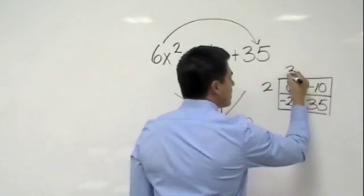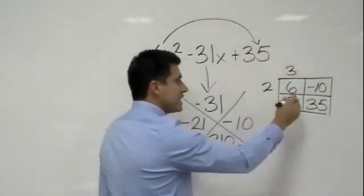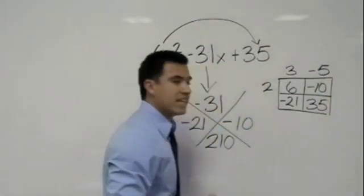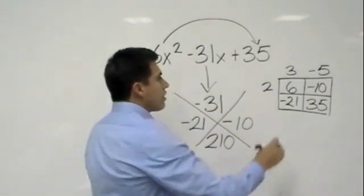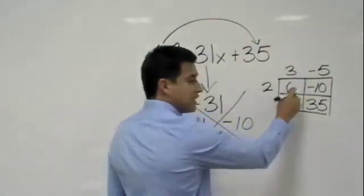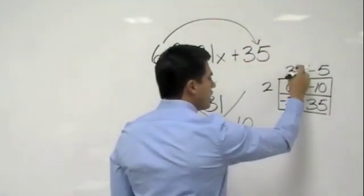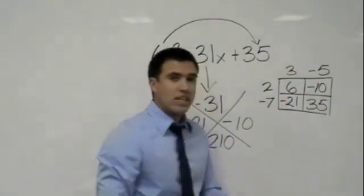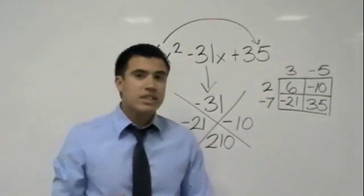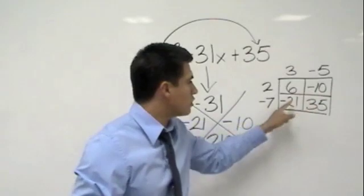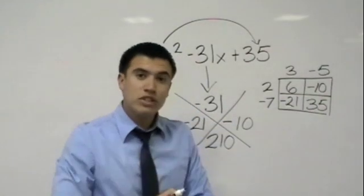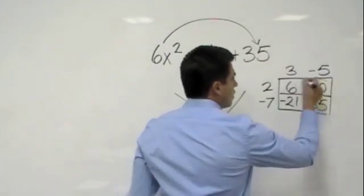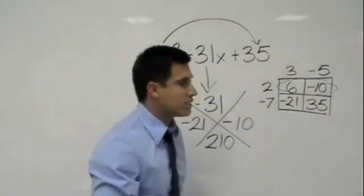2 goes into 6 three times, and 2 goes into negative 10 negative 5 times. So now I have my negative number out. 3 goes into 6 two times, and 3 goes into negative 21 negative 7 times. That's the way I find it's a little easier to work with, especially when these two numbers are negatives. If you want to do that for everyone, just take the greatest common factor out of the first row and then divide. It works.